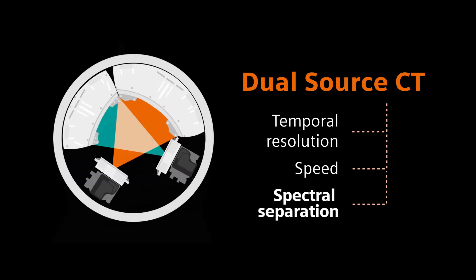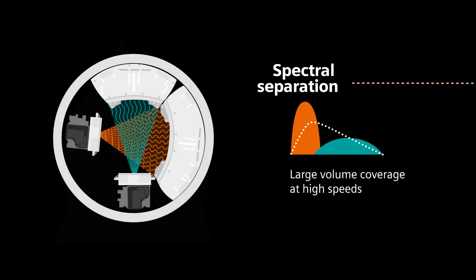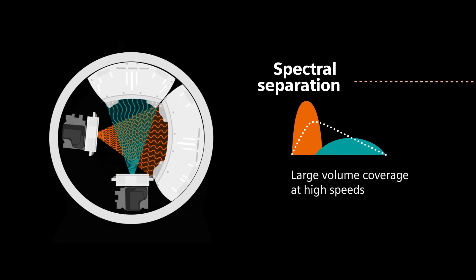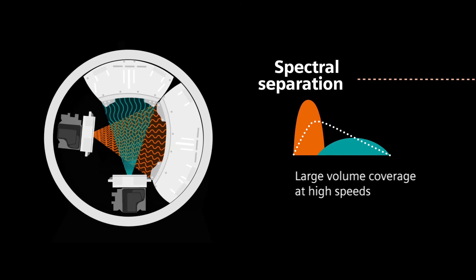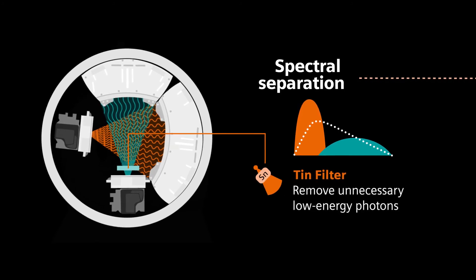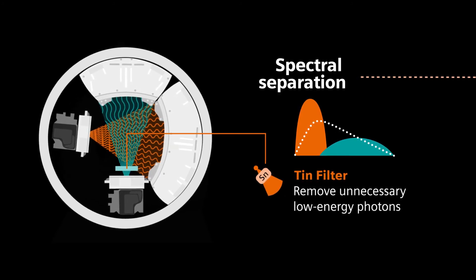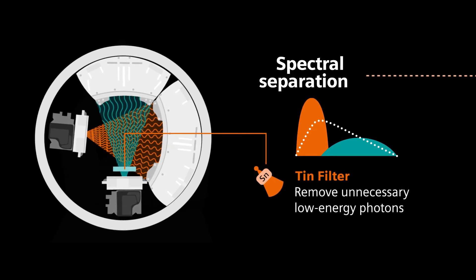Another focus of dual-source CT is spectral imaging, because you can use two different energy levels at the same time, resulting in large volume coverage at high speeds. Combined with our unique TIN filtration, a higher spectral separation can be achieved, which naturally improves image quality.